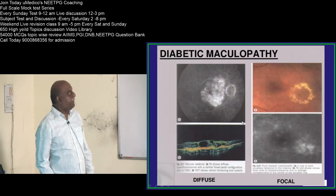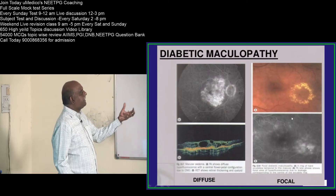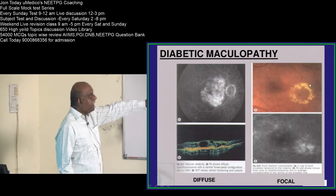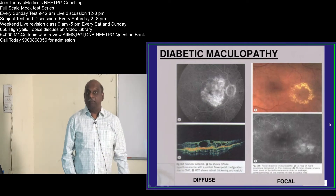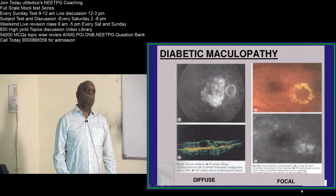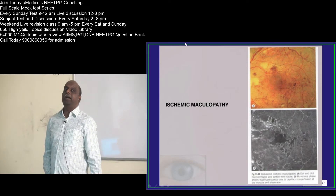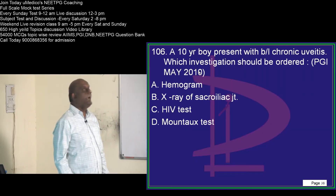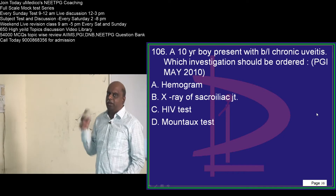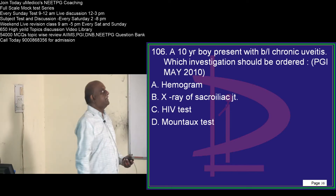The macula is a very important target for diabetic retinopathy. There can be either focal involvement — focal diabetic maculopathy — or diffuse involvement called diffuse diabetic maculopathy. Ultimately the macula gets affected, becomes ischemic, leading to ischemic maculopathy. How to clinically manage and grade diabetic retinopathy is one of the favorite questions of the examiner.